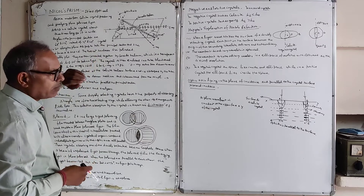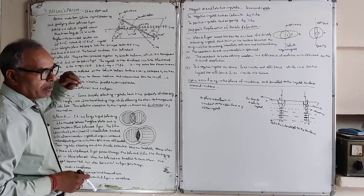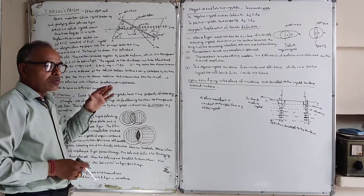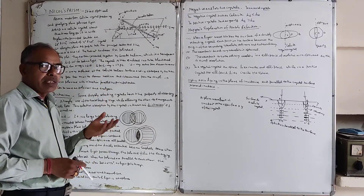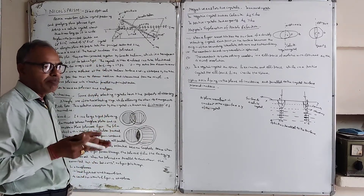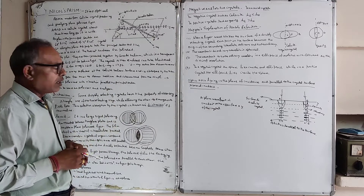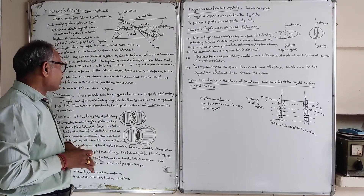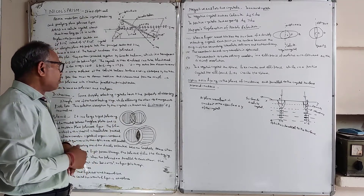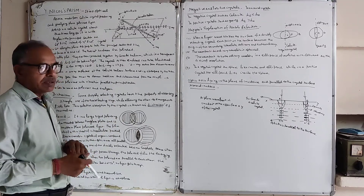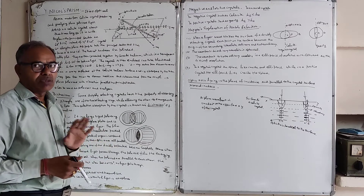This is the Nicol Prism. It can be used both as a polarizer and as an analyzer.